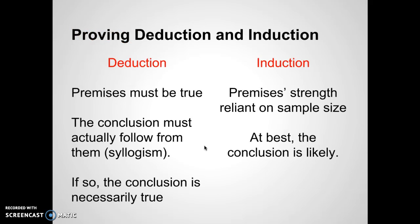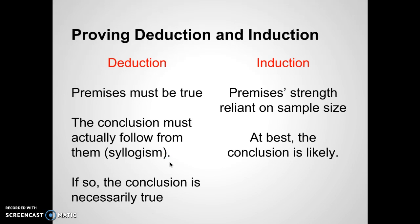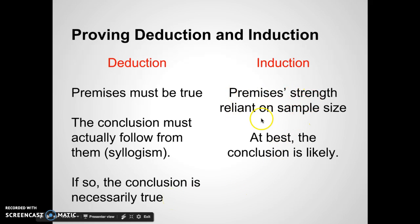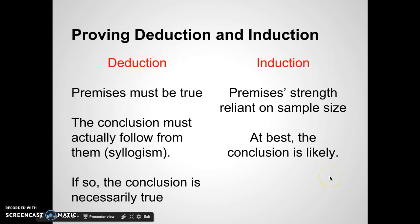Comparing deduction versus induction: in deduction, the premises must be true and the conclusion must actually follow from them in a syllogism — referring back to the 'all' versus 'can' aspect of logic. If those aspects are there, the conclusion necessarily must be true. Premises are true, the logic is good, the conclusion will necessarily be true. In induction, however, the premise's strength is reliant on the sample size — how many red skies have I seen? And even at best, after all that, the conclusion is merely likely.